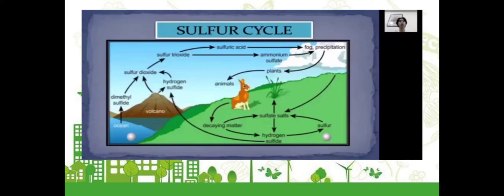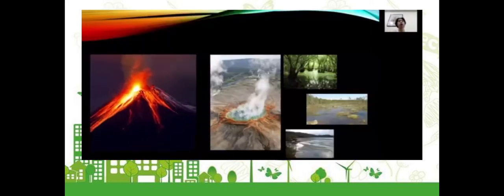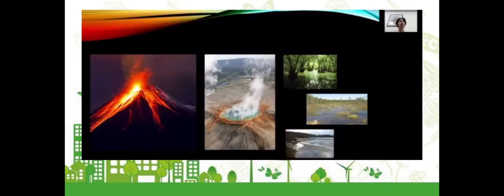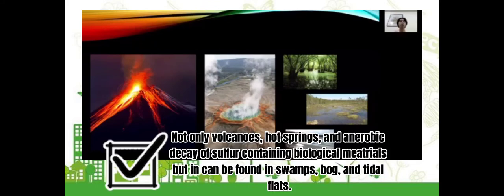Wonderful day to everyone. My name is Justin Jean-Tibbon, I am from BSIT-Tusi. I am going to explain how the sulfur cycle works. Hydrogen sulfide gas is released into the atmosphere by volcanic activity, hot springs and anaerobic decay. Anaerobic decay occurs when bacteria and fungi break down dead matter without oxygen. Not only volcanoes, hot springs, and anaerobic decay of sulfur-containing biological materials, but sulfur can also be found in swamps, bogs, and tidal flats.